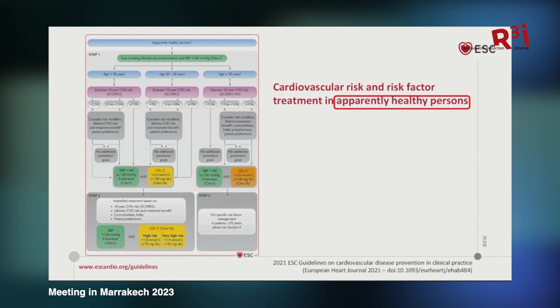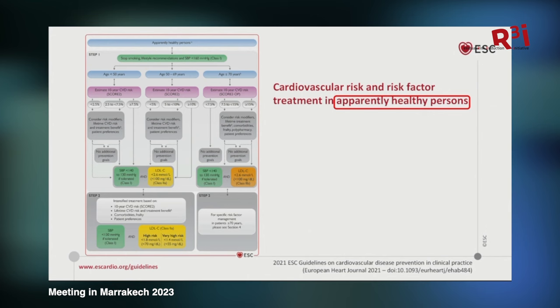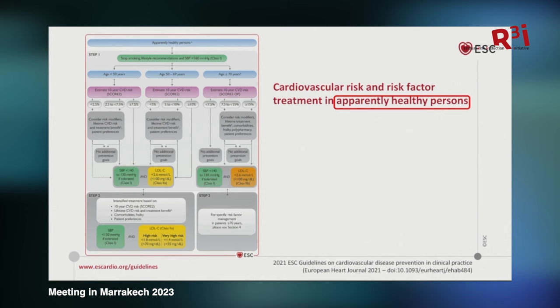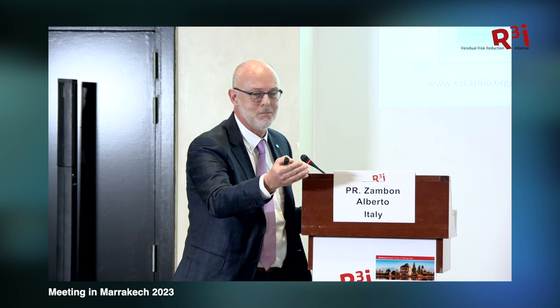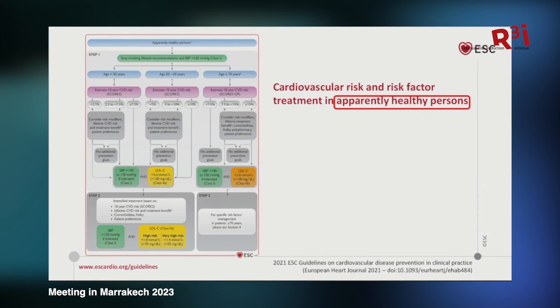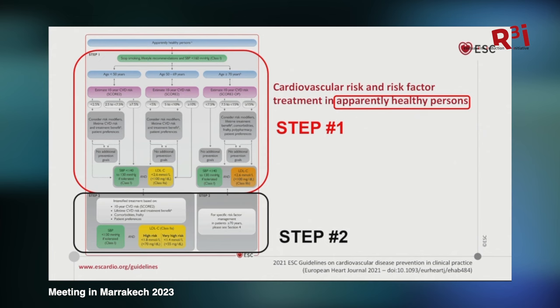Here is the pathway suggested in 2021 by the European Society of Cardiology for primary prevention. Look at this algorithm — think about a neurologist faced with this. You need an age range, you have to calculate a SCORE, then based on three categories look at risk modifiers, set a blood pressure and LDL goal. In step two, if you're not happy, the LDL goal changes to lower. It's simply not feasible in clinical practice. We don't have time to do that.